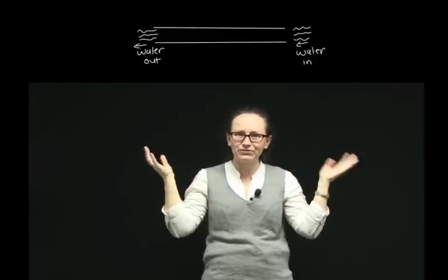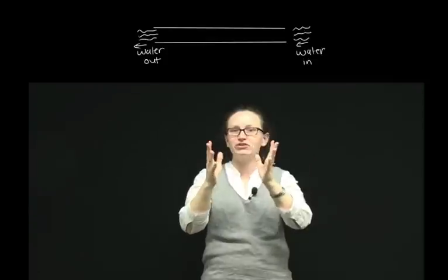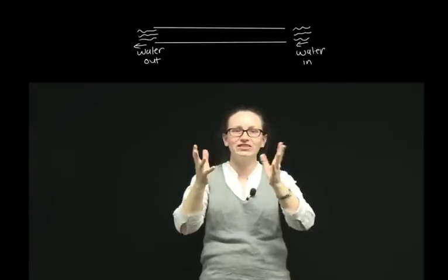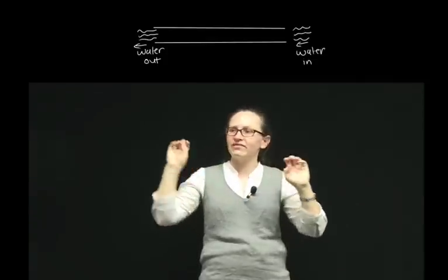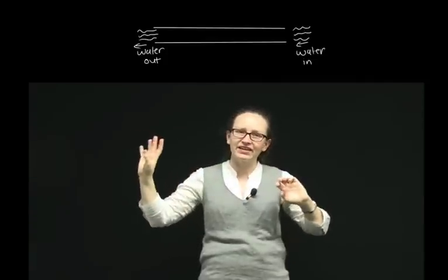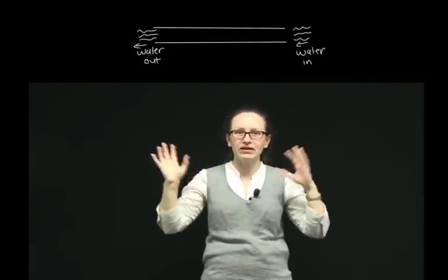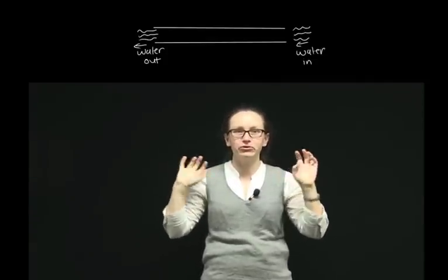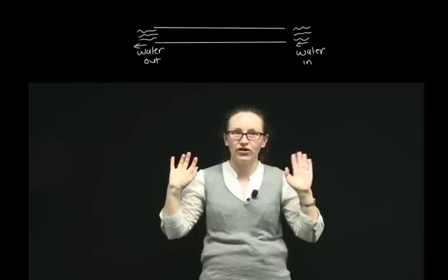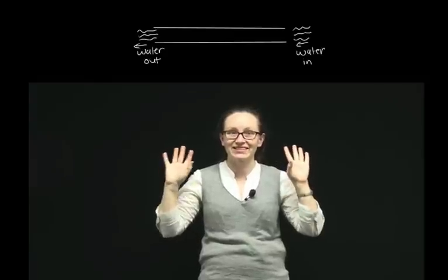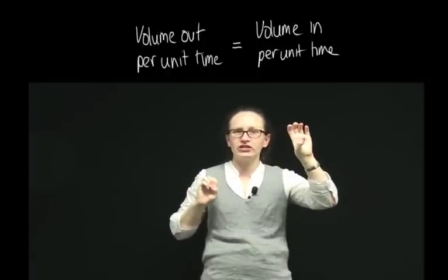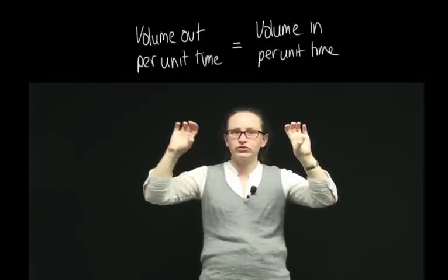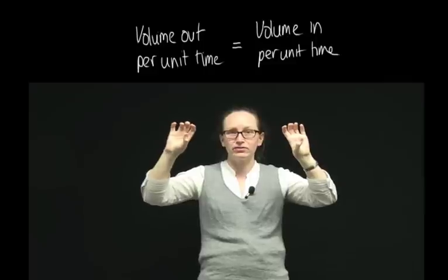If that didn't happen, we'd have a big buildup of water in the hose, or we'd have extra water coming out at the end — so we'd be magically creating water somehow in the hose, and that doesn't happen. So we know that the volume in per unit time is equal to the volume out per unit time.